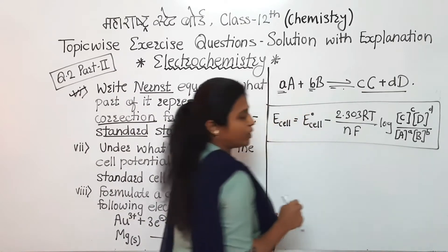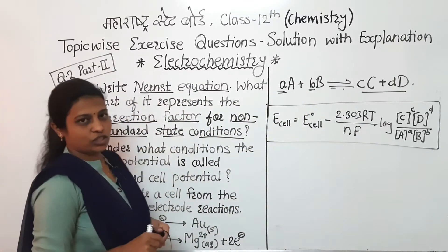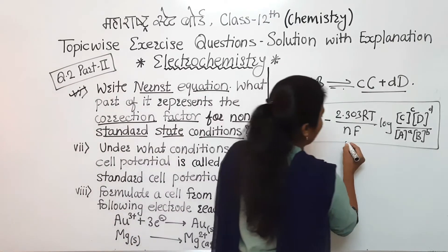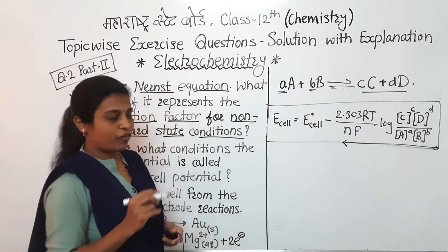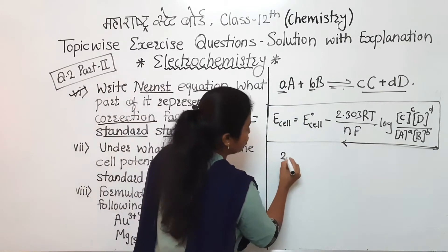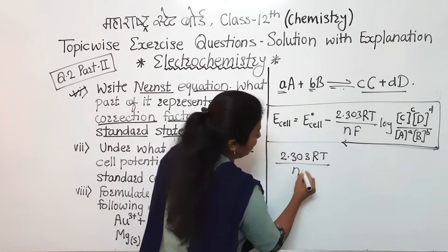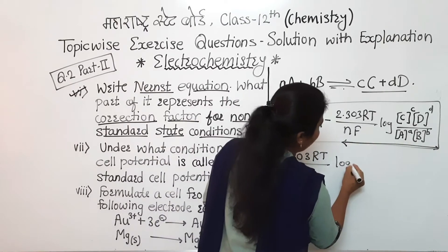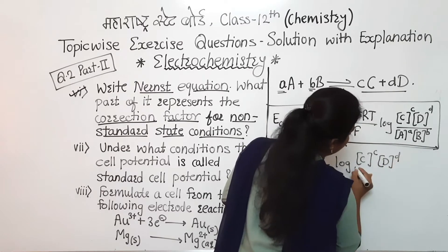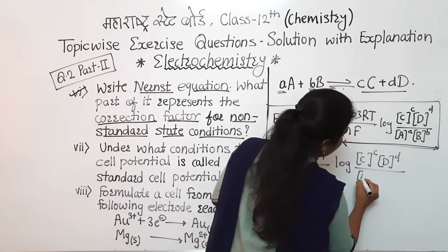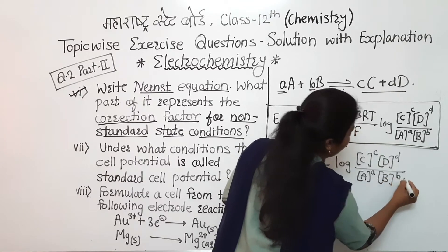Now, which part of this equation is the correction factor for non-standard conditions? The second part — that is, (2.303RT / nF) × log([C]^c [D]^d / [A]^a [B]^b) — represents the correction factor.